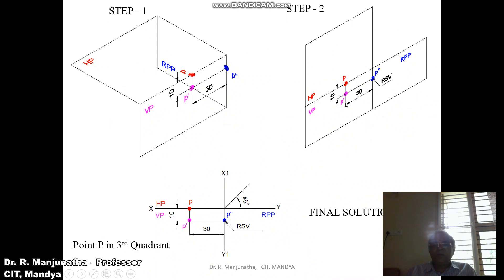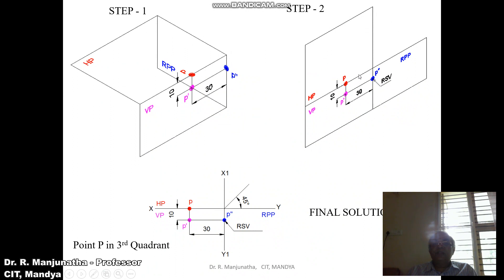We cut the planes and rotate HP upward and RPP to the right side. In the second step, RPP is on the right side, VP is adjacent to RPP, and HP is above the XY line. The distance behind RPP is seen in VP and HP, and the distance 10mm below HP is seen in the vertical plane as P dash. Looking from the right side view, P double dash is obtained — this will be the right side view.